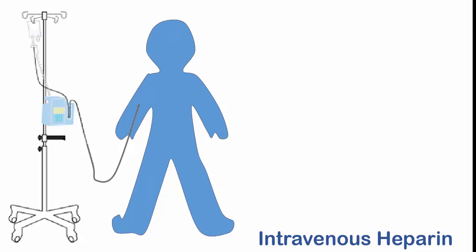Many times, the first part of the order is to give a bolus. The bolus is typically a large dose of heparin — here it is 80 units per kilogram. It is not per hour because it is given as an IV push. That means we'll use the syringe to administer the heparin through the IV tubing directly into the patient's veins.